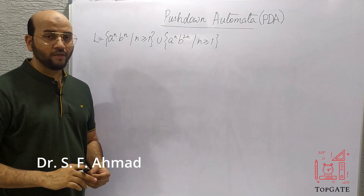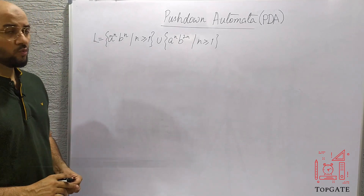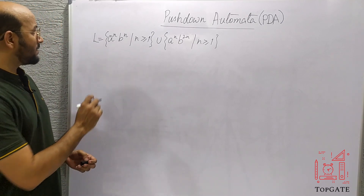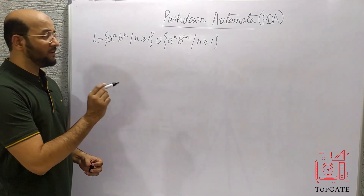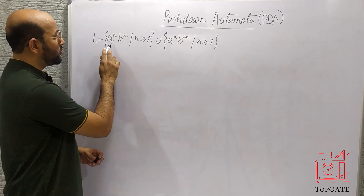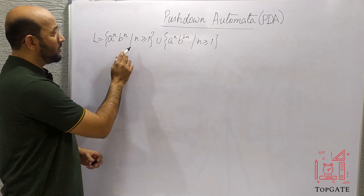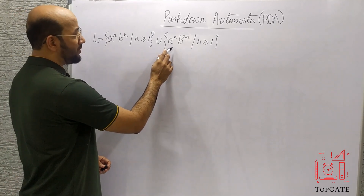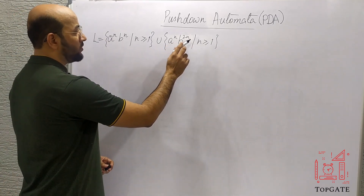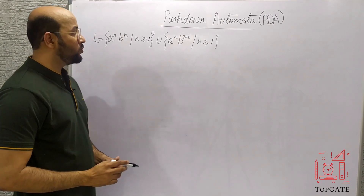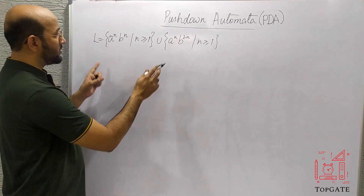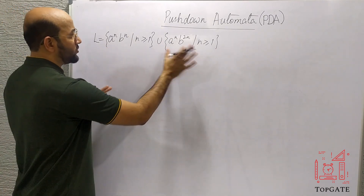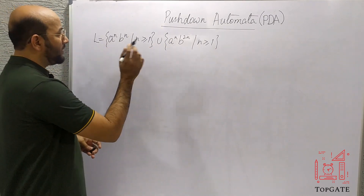Hello students, welcome to the channel Topgate. Today we will discuss one more NPDA example. We have to design a PDA for the language L equal to a^n b^n where n is greater than or equal to 1, union a^n b^2n where n is greater than or equal to 1. So we have to design a PDA that accepts either this string or this string. It will be an NPDA.